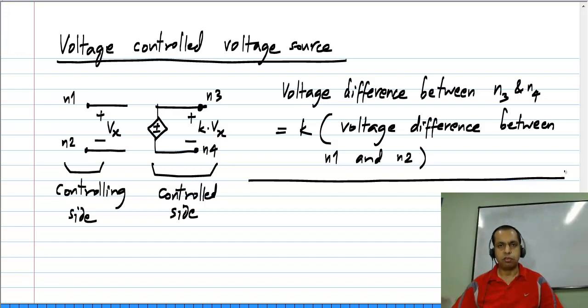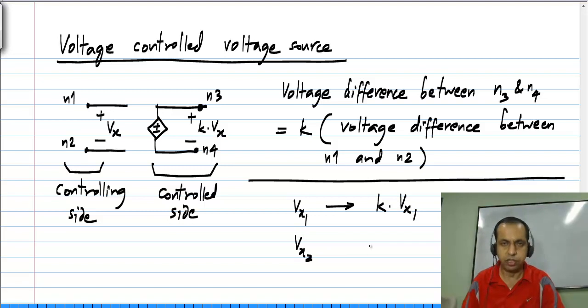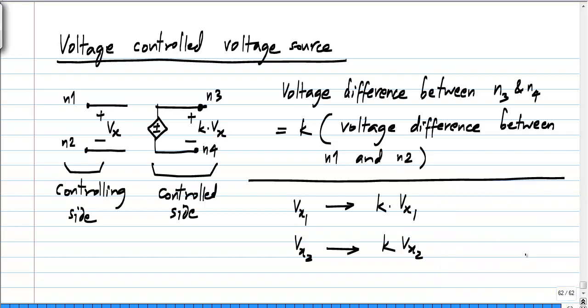First of all, why is this linear? Let's say Vx1 is the controlling voltage; this results in a controlled voltage which is k times Vx1. And if Vx2 is the controlling voltage, it results in a controlled voltage. Let's say the controlling voltage is alpha times Vx1 plus beta times Vx2.